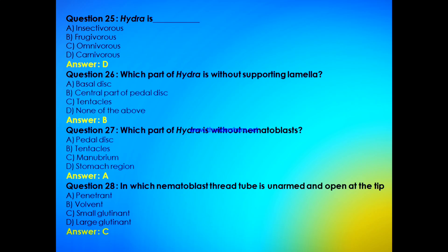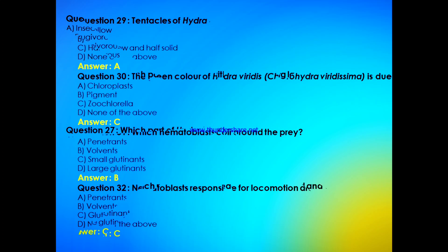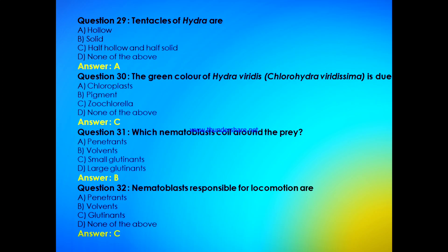In which nematoblast is the thread tube coiled and open at the tip — penetrant, volvent, small glutinant, or large glutinant? The answer is C, small glutinant. Next question: tentacles of Hydra are hollow, solid, half hollow and half solid, or none of the above? The answer is A, hollow type.